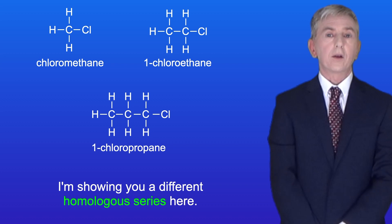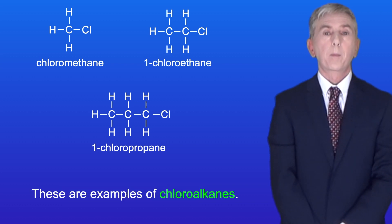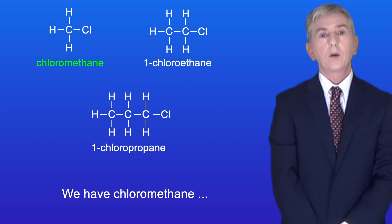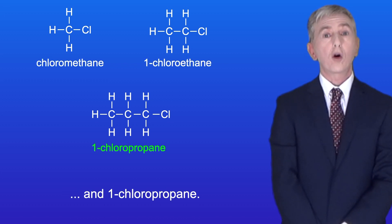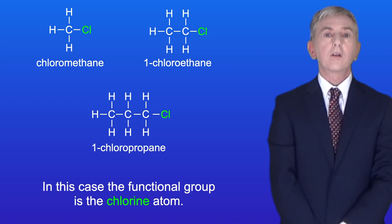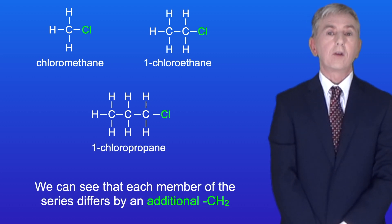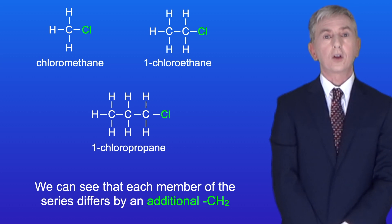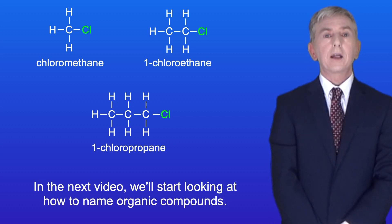I'm showing you a different homologous series here. These are examples of chloroalkanes. We've got chloromethane, 1-chloroethane and 1-chloropropane. In this case the functional group is the chlorine atom, and we can see that each member of the series differs by an additional CH2. In the next video we'll start looking at how to name organic compounds.